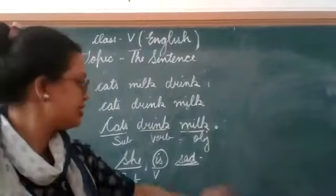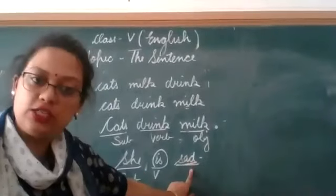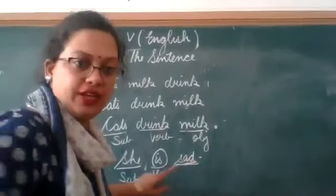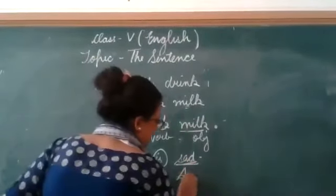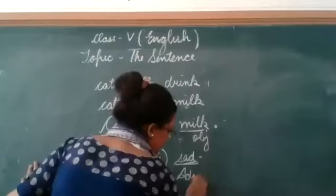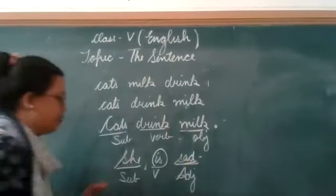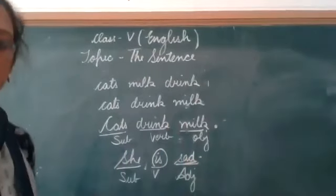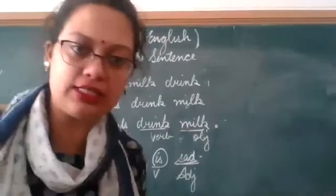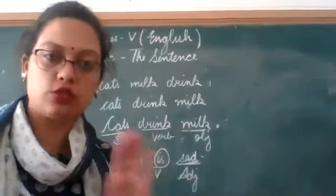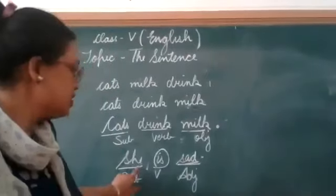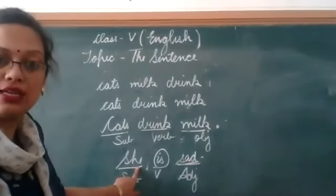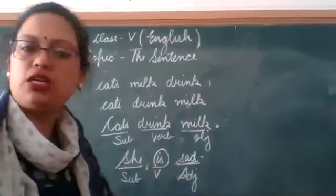Very nice. 'Sad' is an adjective. Very nice. So sometimes, stop writing and listen to me — sometimes in the sentence there can be a subject and a verb, but object is not always present in the sentence.